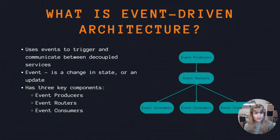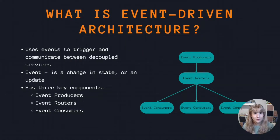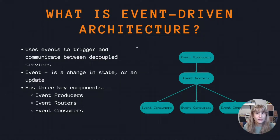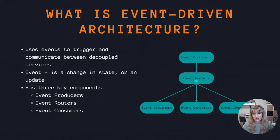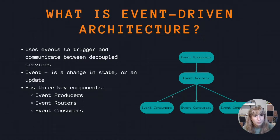Events can carry either a state — like an updated profile holding your name and address — or events can be identifiers. For instance, on YouTube you can receive a notification that a new video was uploaded. Event-driven architecture has three key components: event producers, event routers, and event consumers. A producer publishes an event to the event router, which filters and pushes those events to consumers. Producer and consumer services are decoupled, allowing them to be scaled, updated, and deployed independently.